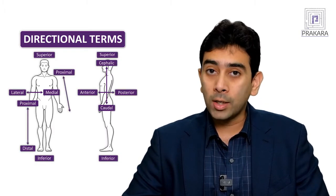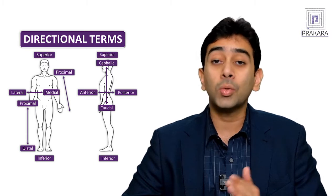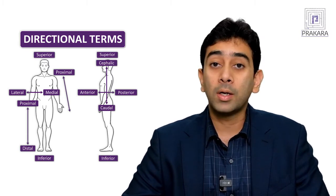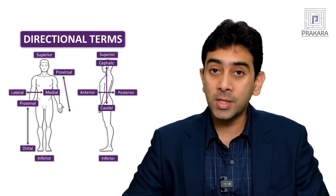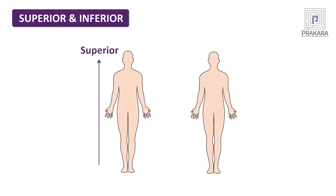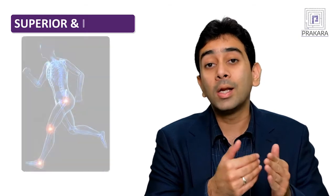The most important type of anatomical terms are directional terms. To detect and locate various parts of the body in relation to each other, these directional terms can be used. Directional terms are usually found in pairs and they have opposite meanings to each other. For example, superior means above and inferior means below. It is important to note that directional terms are relative to each other — they only make sense when you mention one part of the body in relation to another.